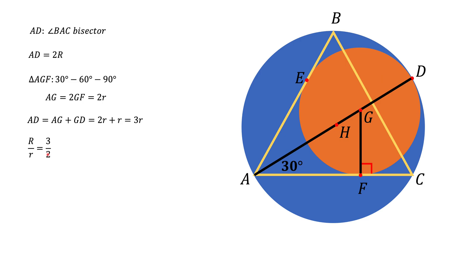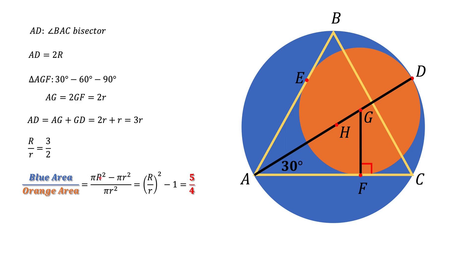Now we can calculate the ratio of the areas. The blue area is the area of the large circle, πR², minus the area of the small circle, πr². We divide this by the orange area, which is πr². Simplifying this expression and using the fact that R/r = 3/2, we get that the ratio of the areas is 5/4. That's the final answer.